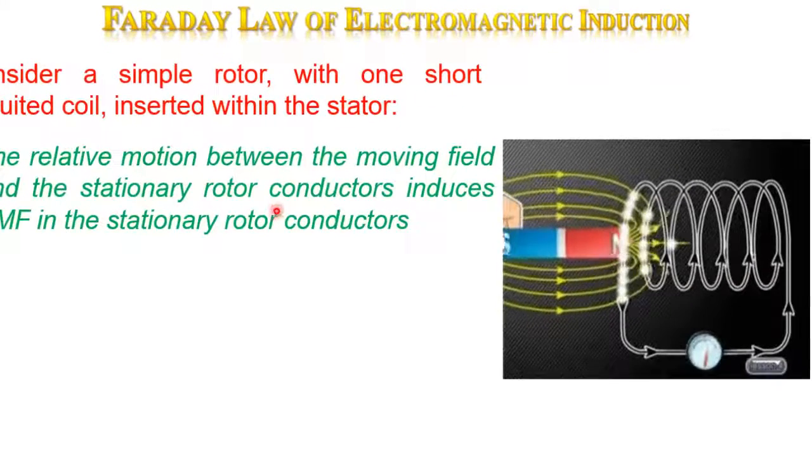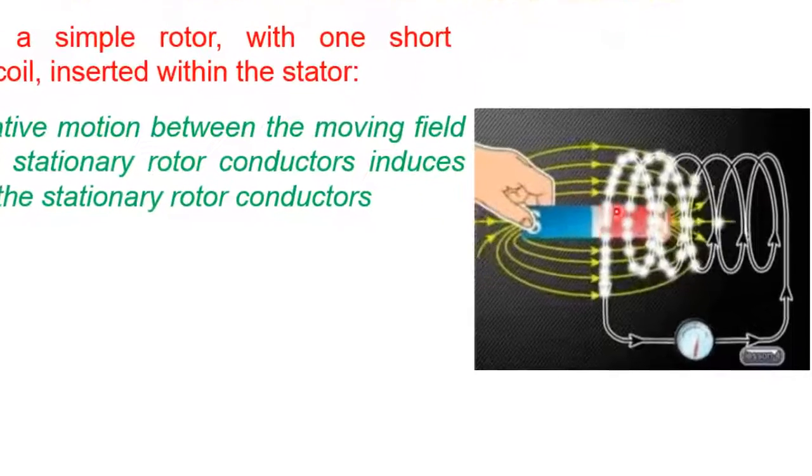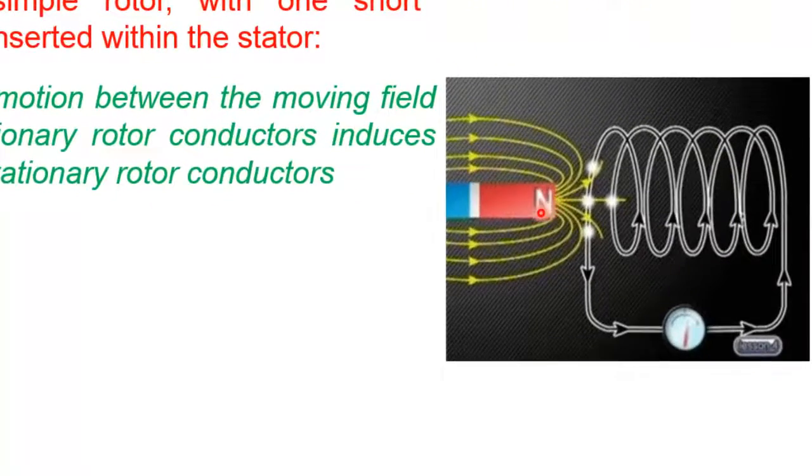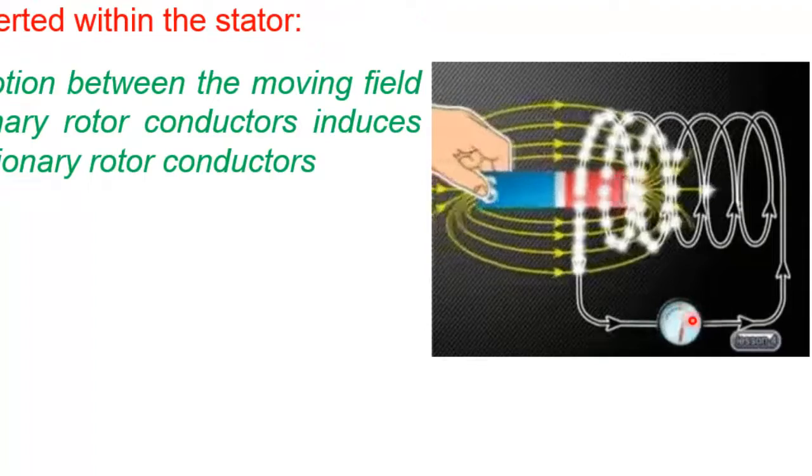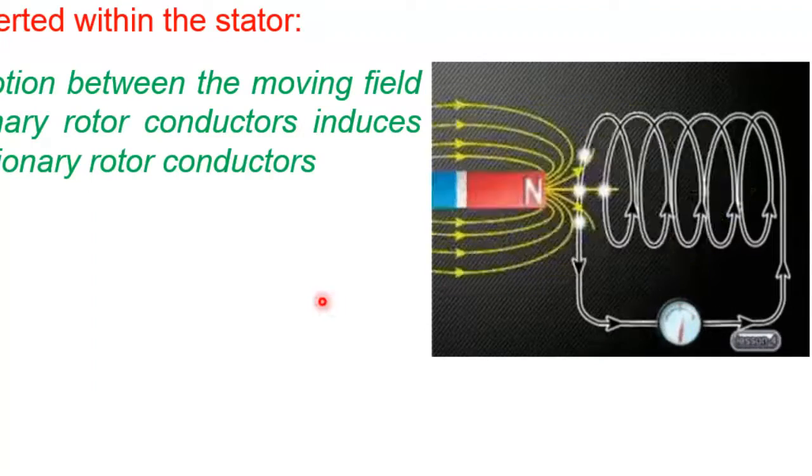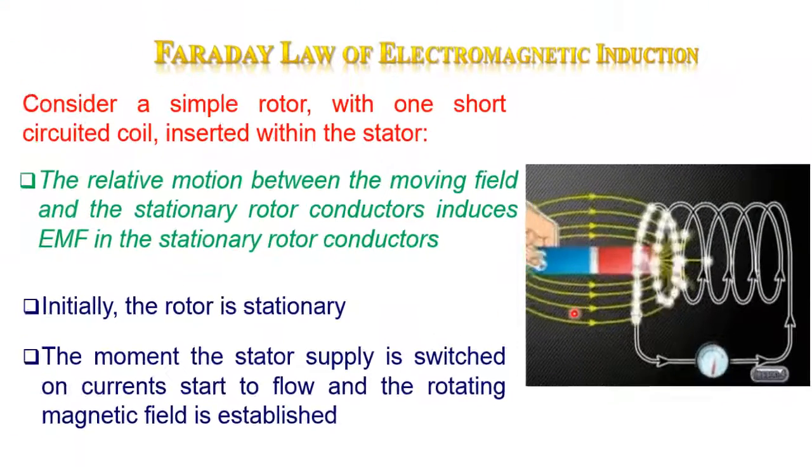Which states that whenever a conductor is placed in a changing or rotating magnetic field, an electromotive force is induced. If the conductor circuit is closed, a current is induced.